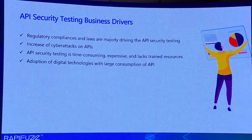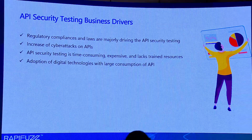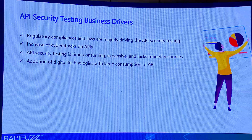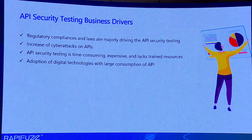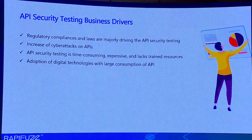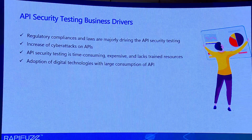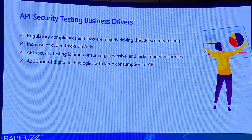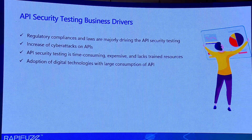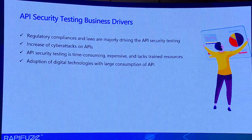Another CISO shared with me: 'I do get some information about the APIs, but I don't know what to do next because my security professionals are not trained to test an API.' This is a very valid reason — we have lots of open positions at RapiFuzz but we're not able to hire the right person. We ask one simple question: give me one single differentiator between a web URL and an API. Nobody has an answer. They're not able to figure out stateless versus stateful architecture.